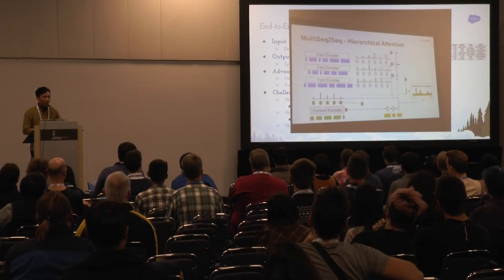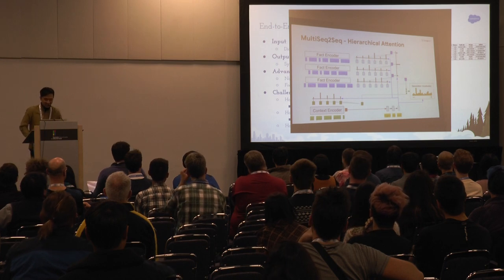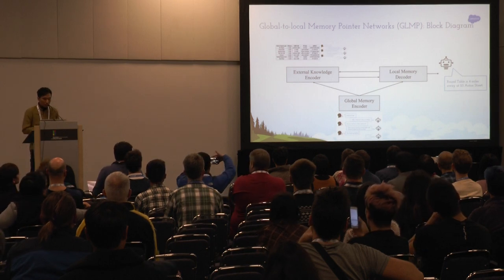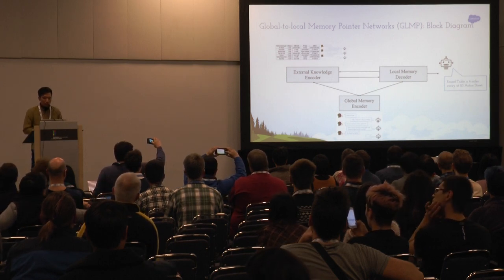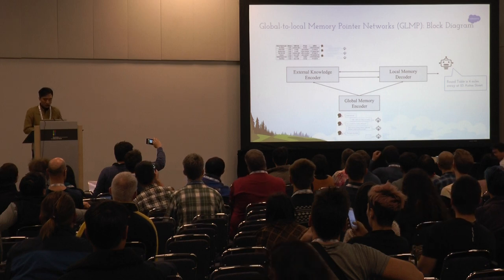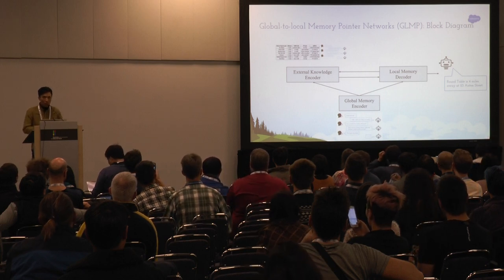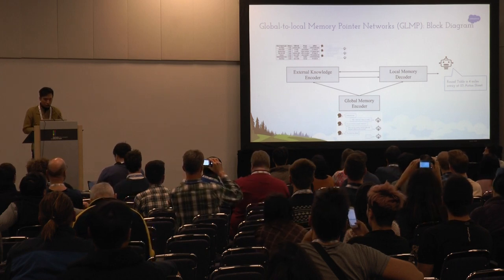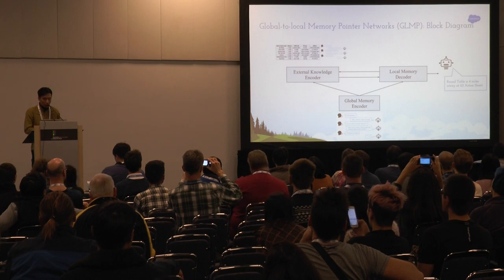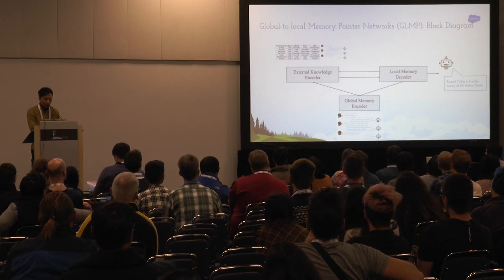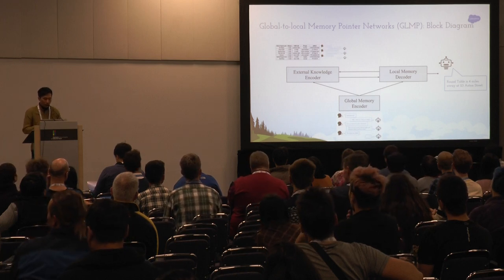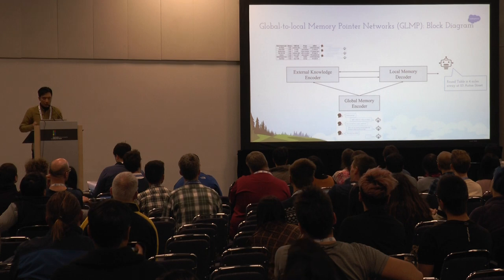In our model, Global to Local Memory Pointer Network (GLMP), we have three components. First, a global memory encoder encodes the dialogue history. Second, an external knowledge encoder encodes both the dialogue history and the knowledge graph. While decoding, the local memory decoder interacts with external knowledge and then generates the final system response — for example, 'Round Table is four miles away at some address.'